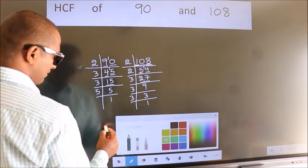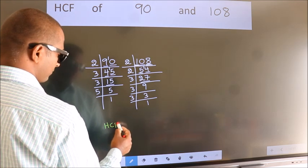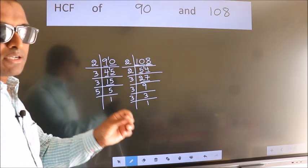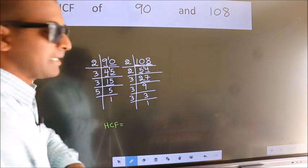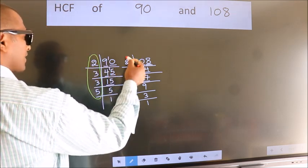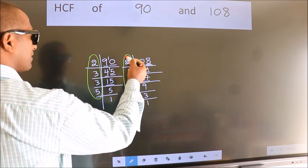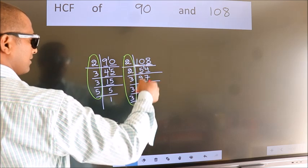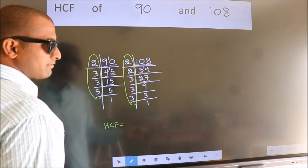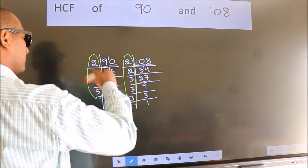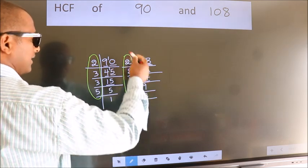Therefore, our HCF is the product of the numbers which should be present over here and also here. Here, here and here. So, now let us find the numbers which should be present here and here.